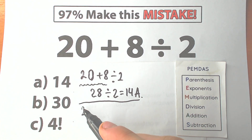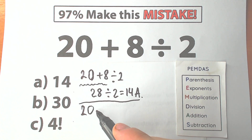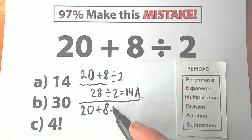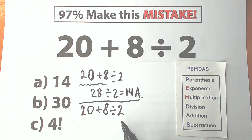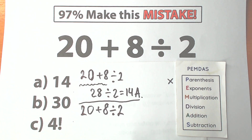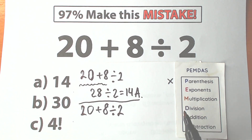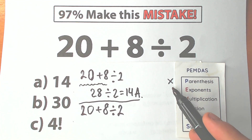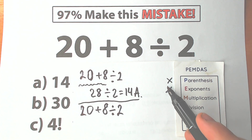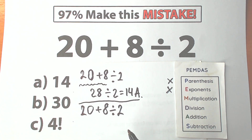Here is our question: 20 plus 8 divided by 2. Let's go through the steps. The first step is parentheses — do we have any parentheses? I don't see any, so we skip this part. The next step is exponents — I don't see any exponents either, so we skip that as well. If we had squares, cubes, or higher powers we would handle those here, but we don't, so we move on.